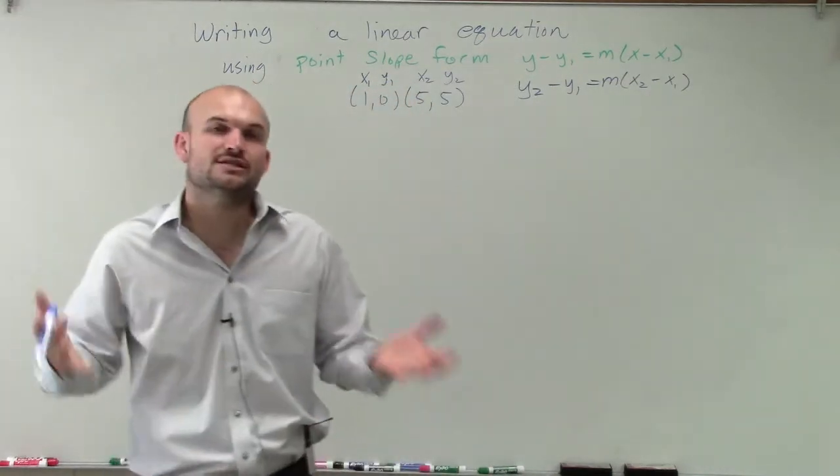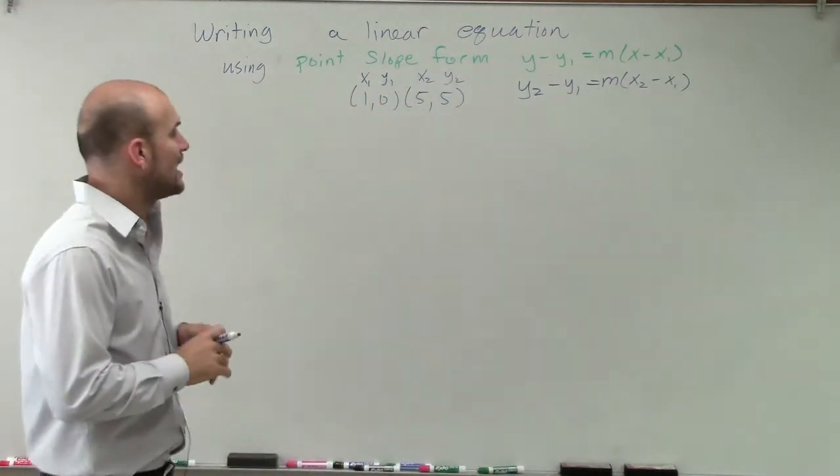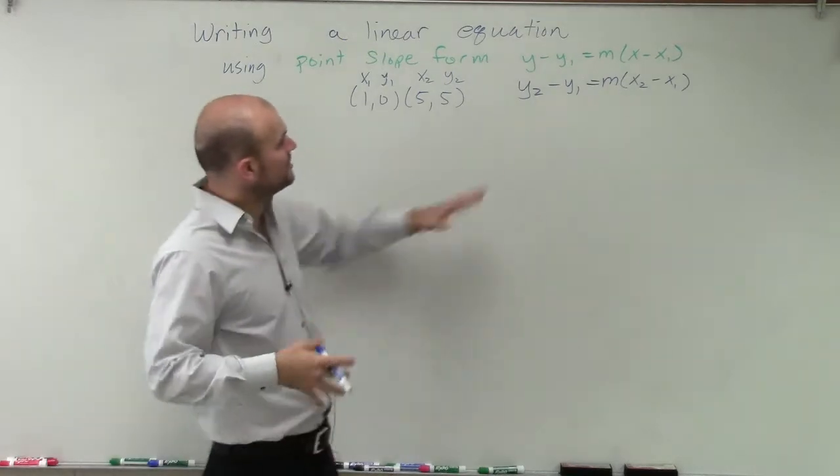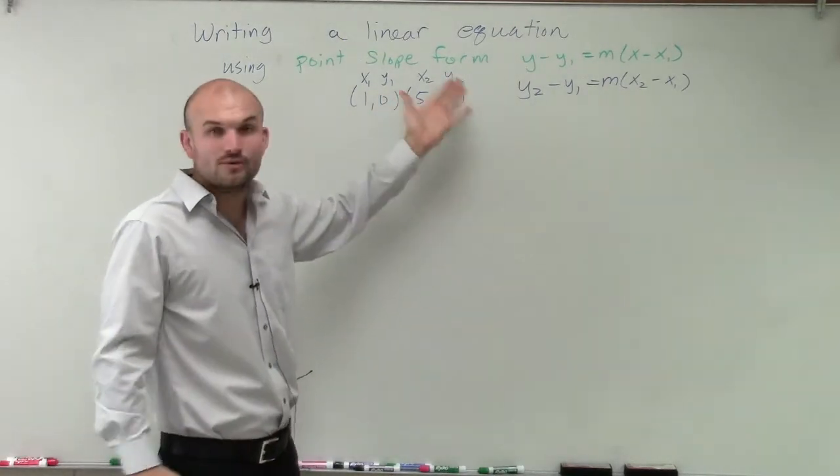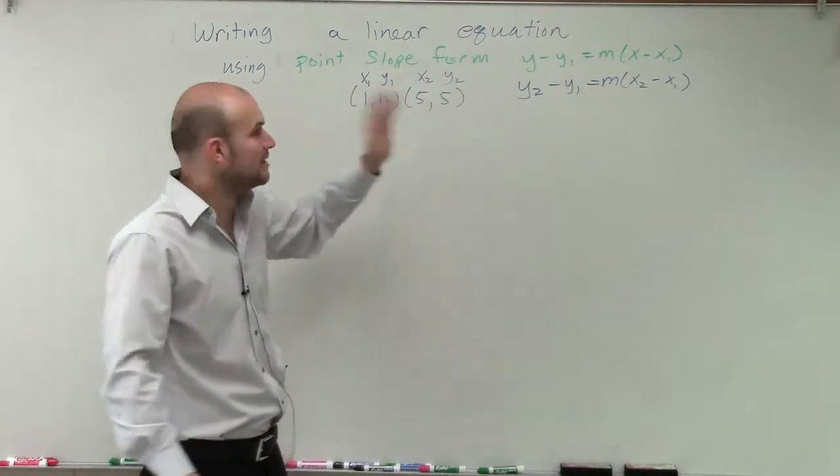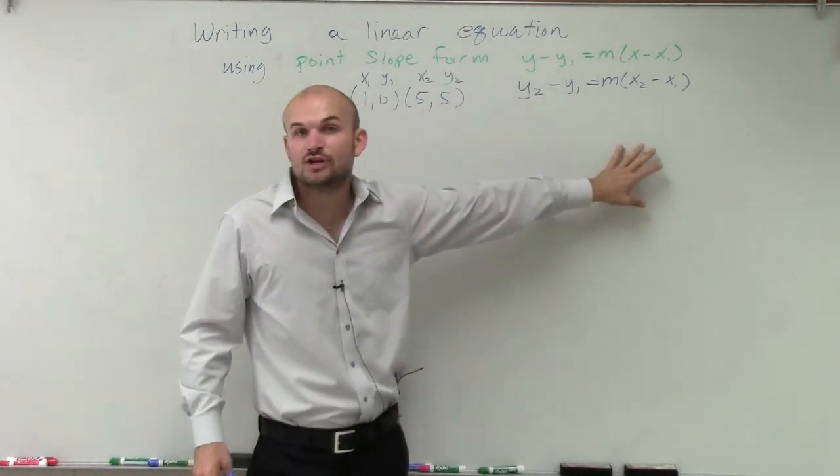The only thing we're doing is we're just changing the labeling of our y and our x's. So when doing it at this point, you can see, now I'm simply going to just plug in the y₂, x₂, y₁, and x₁ into this equation to be able to determine my slope.